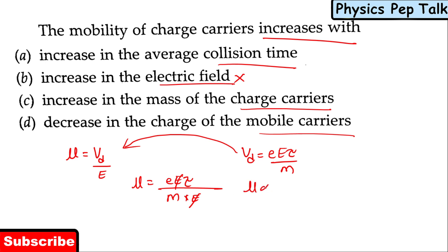The E terms cancel. From this, I can say μ is directly proportional to the charge of the electron, and μ is directly proportional to the relaxation time — also called collision time.